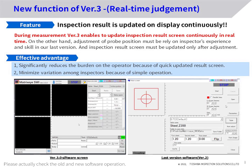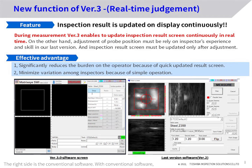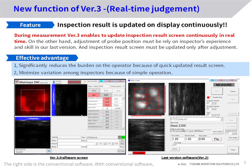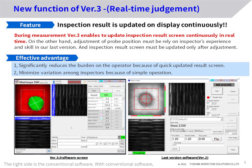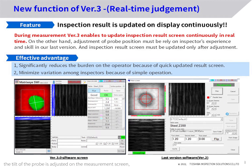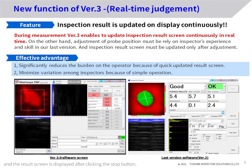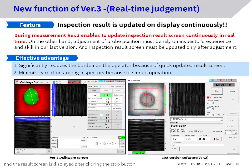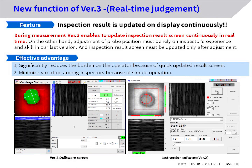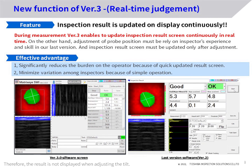Please check the old and new software operation. The right side is the conventional software. With conventional software, the tilt of the probe is adjusted on the measurement screen and the result screen is displayed after clicking the stop button. Therefore, the result is not displayed when adjusting the tilt.